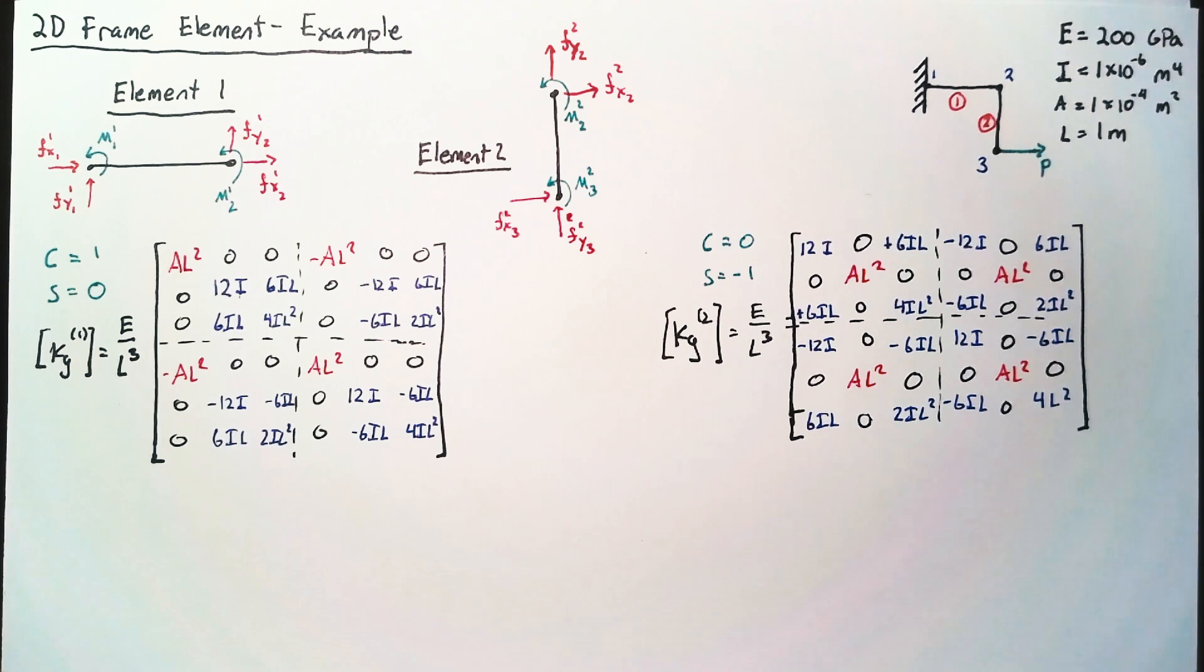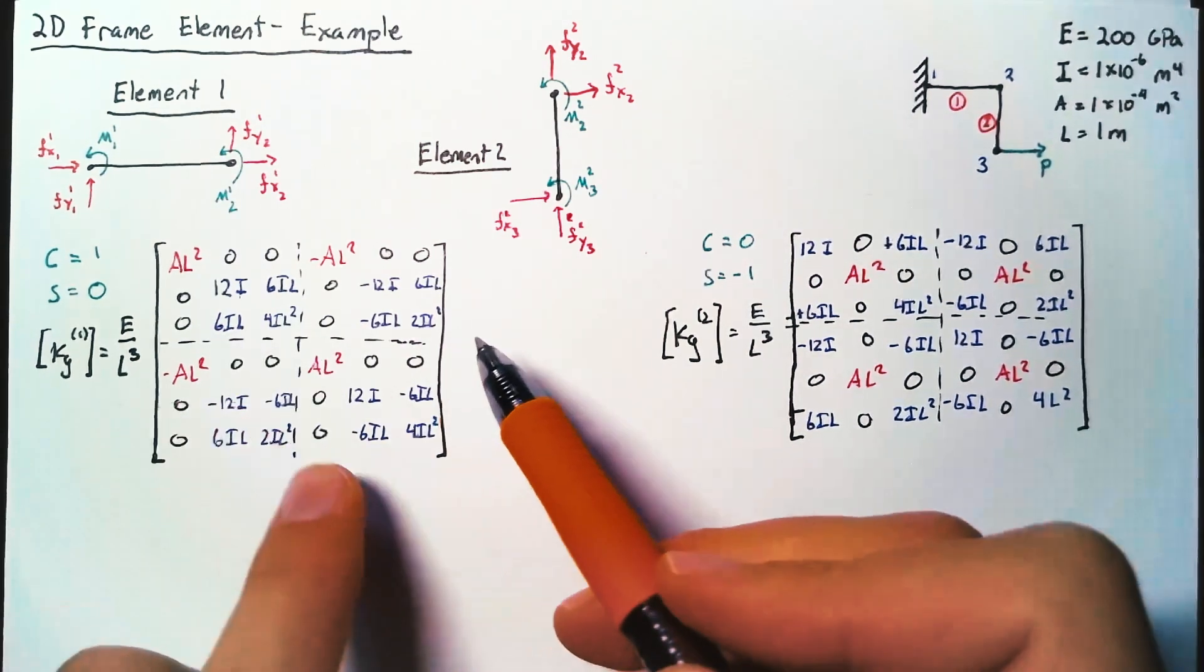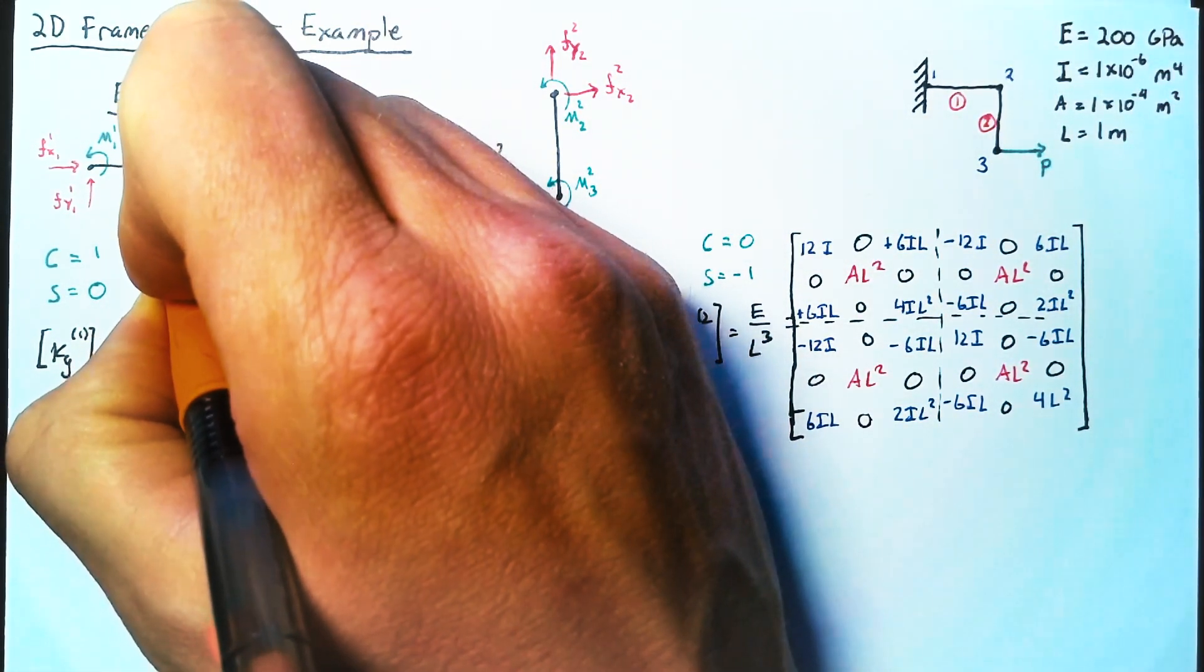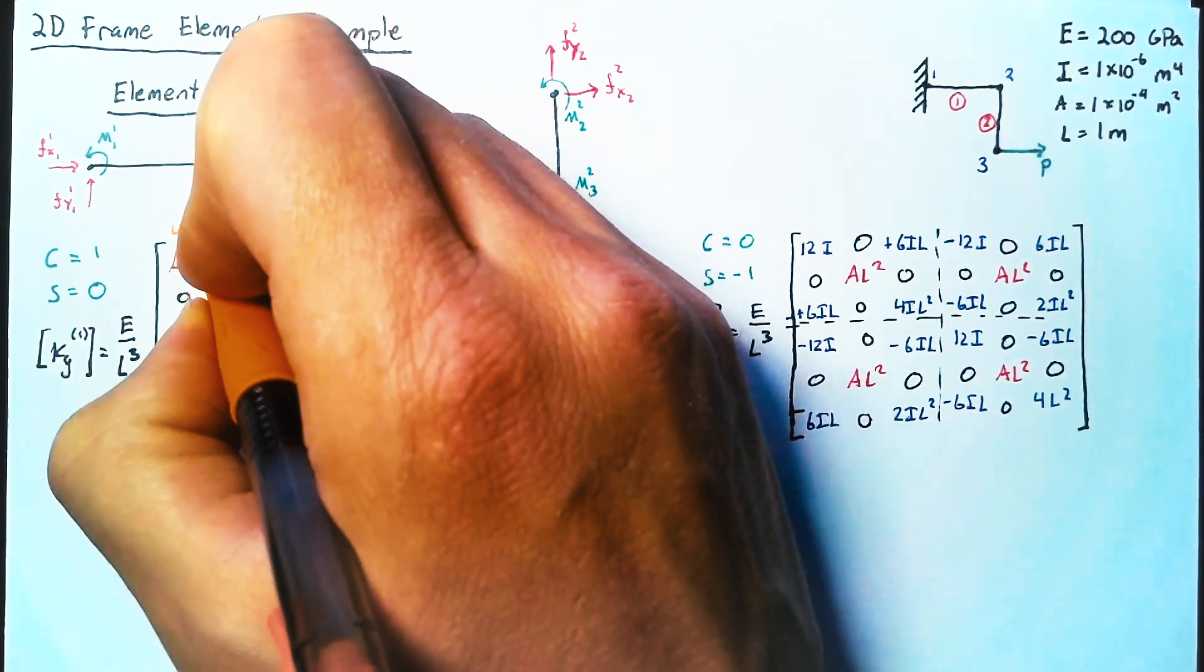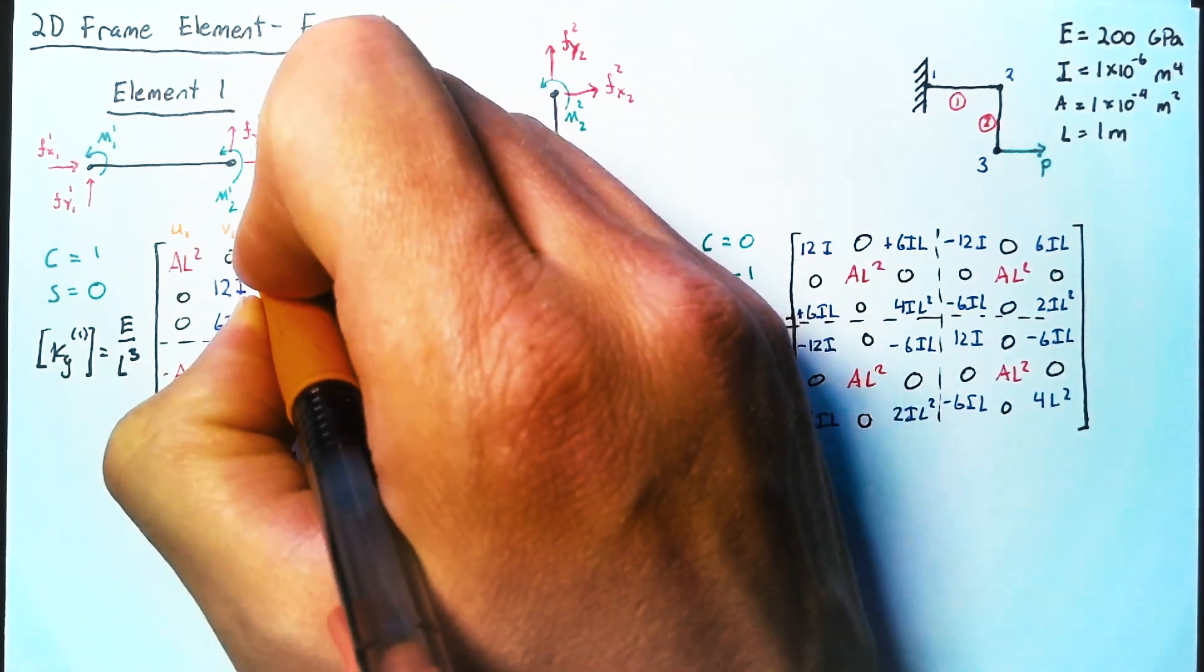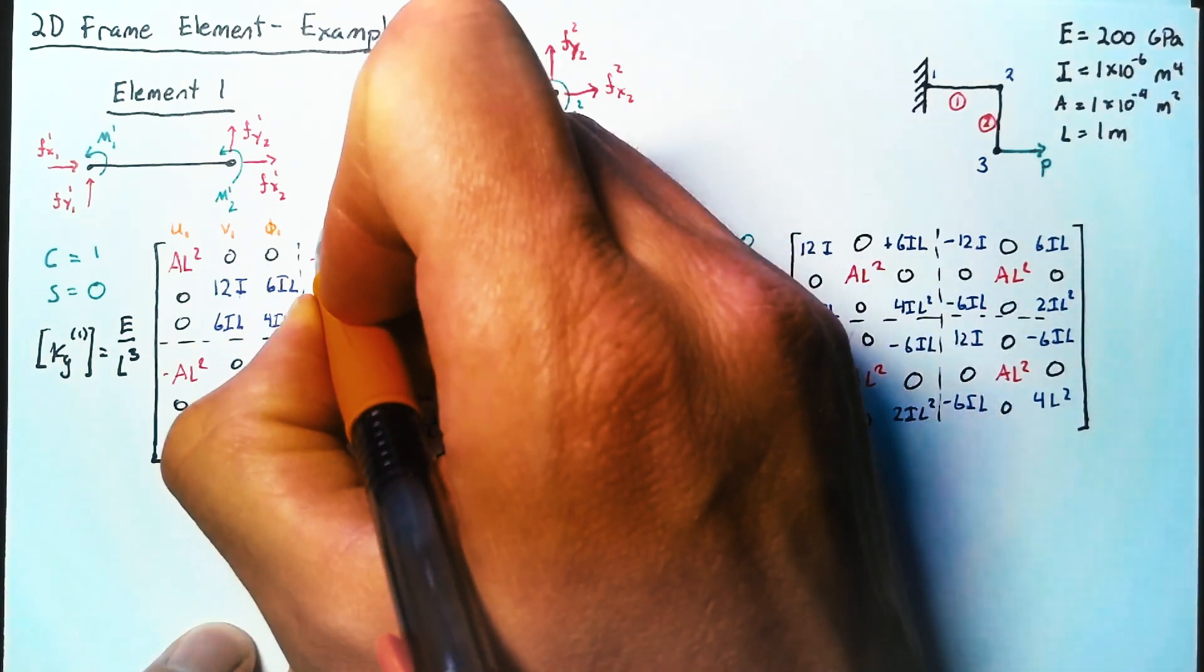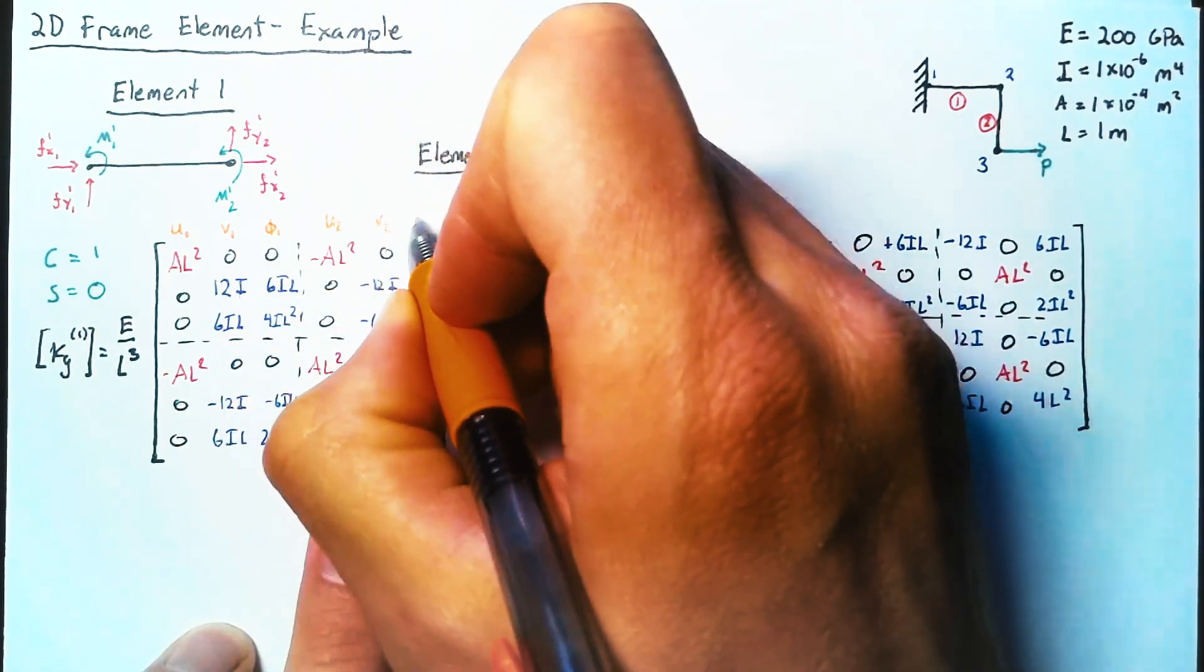All right, in order to assemble, it's helpful to remind ourselves what these matrices are actually linking to. And so the first column here is referring to u1, the second to v1, and the third to phi1, or rotation. And then the next three columns here are u2, v2, and phi2.